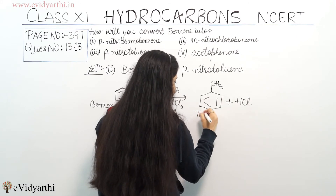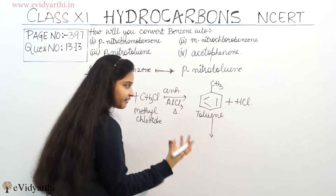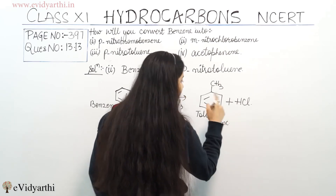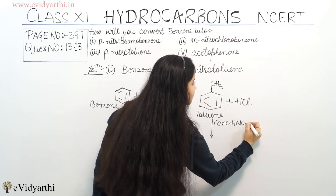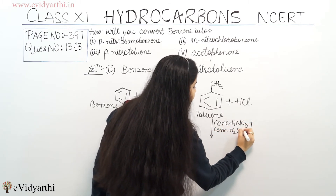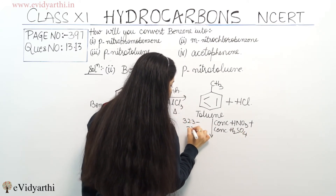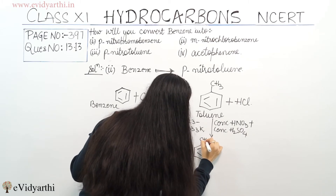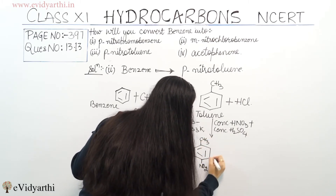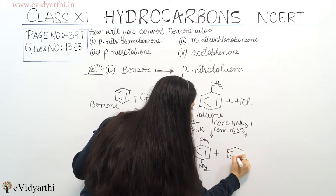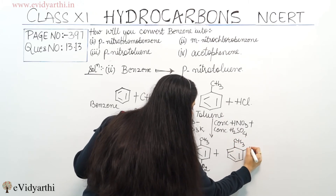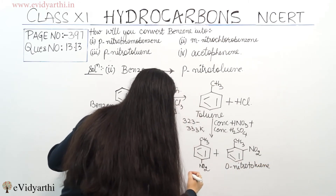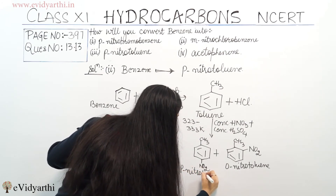Now I take this toluene and do nitration. I add concentrated HNO₃ plus concentrated H₂SO₄ at a temperature of 323 to 333 Kelvin to this toluene. I get two products: para-nitro-toluene and ortho-nitro-toluene.